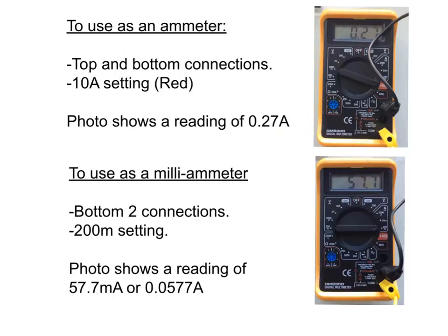Using it as a milliamp meter, we're in the bottom two connections here and we've got it on the 200m setting here. If you're reading 57.7, that means it's 57.7 milliamps, which is the same as that divided by a thousand, so 0.0577 amps.